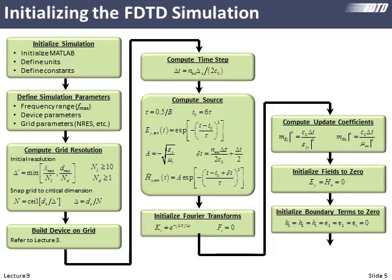We pull together this large block diagram of the complete finite difference time domain algorithm. We initialized our simulation, defined everything about what we want to model. We calculate our grid resolution, build the device on the grid, calculate our time step, calculate the source, initialize our Fourier transforms, calculate the update coefficients, set all of our fields to zero, initialize our boundary terms, and now we're ready to enter the main time loop.